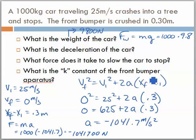What is the K constant of the front bumper apparatus? Well, I now know the force. And the bumper, which acts like a spring, is what absorbed all that force. So I can say then, I'm still running out of a lot of room, that force equals negative KX. And the force in this case, which is negative 1,041,700 equals K times 0.3.